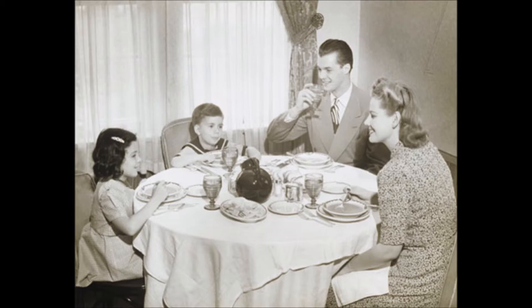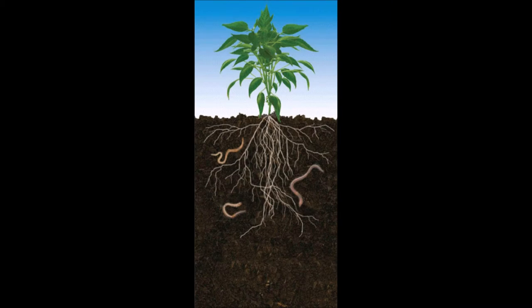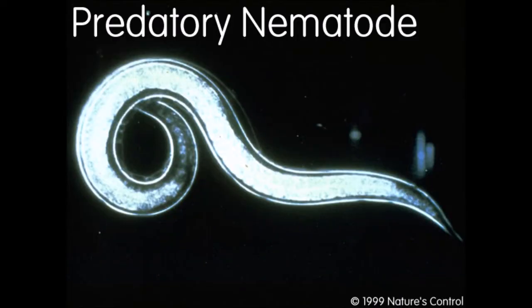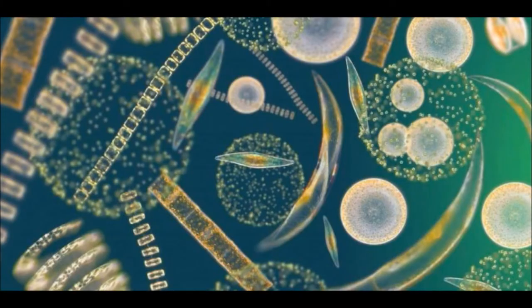Nematodes can be herbivores, carnivores, parasites, generalists, or specialists. If an organism is an herbivore, then they only eat plants. If an organism is a carnivore, then they only eat meat. If an organism is a parasite, they gain nutrients from another organism and harm them in the process. If an organism is a generalist, then they make use of a wide variety of resources. If an organism is a specialist, then they make use of only particular resources.